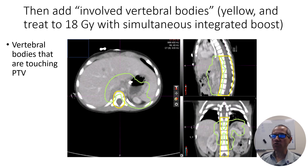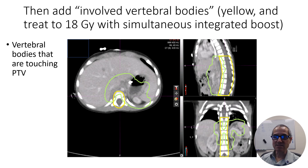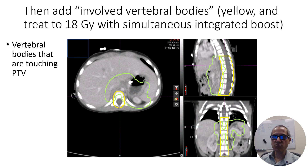Finally, I add what I call the involved vertebral bodies as a separate structure — that is, on axial slices, the vertebral bodies that are touching the PTV. The contouring guidelines also say to include the transverse processes from those vertebral bodies. I haven't included them here in yellow, but one might. The key point is that on axial slices, whatever vertebral bodies are touching your PTV should be included.